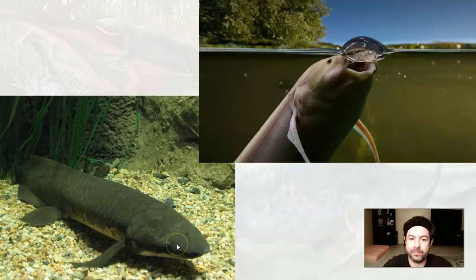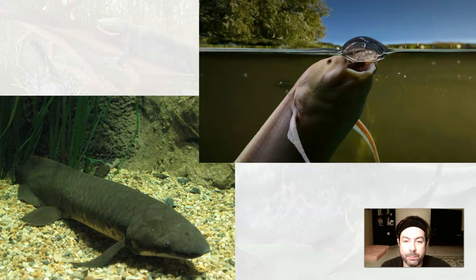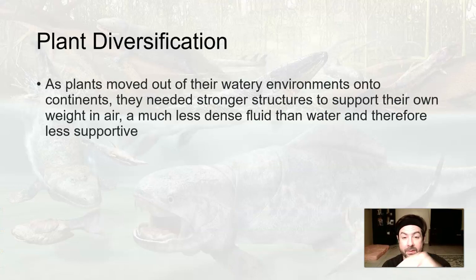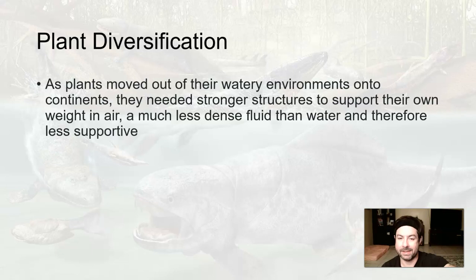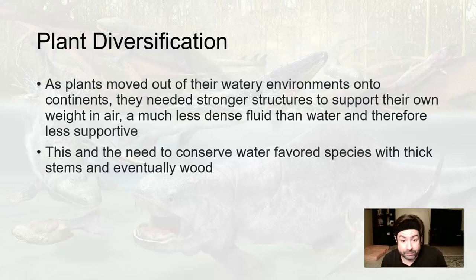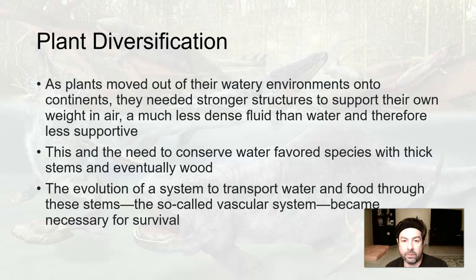Here's a modern-day lungfish that breathes air — one step in the evolutionary process for organisms to eventually make their way onto land. During this time, plants diversify. As plants move out of watery, swampy areas onto continents, they need stronger structures to support their own weight since air is less dense than water. They also need processes to conserve water. The evolution of the vascular system to transport water and nutrients through stems became necessary for plants to diversify on land.